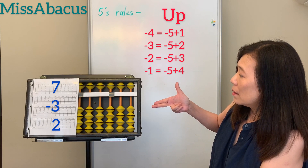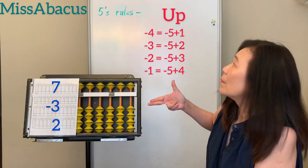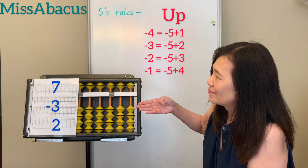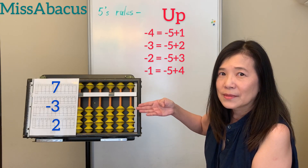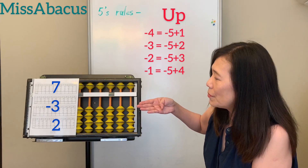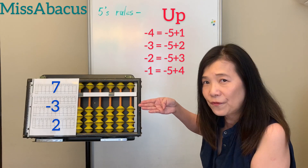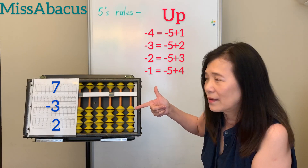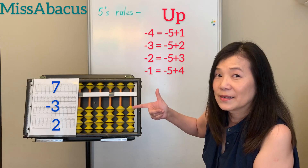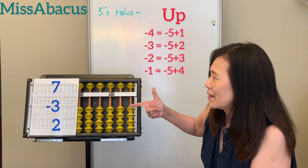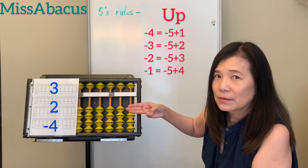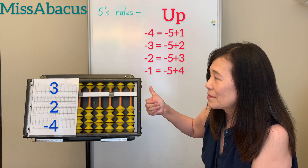Let's do number 6: 7, 5, 6, 7 minus 3. So minus 3 — the rule is minus 5, plus 2. Plus 2: how to plus 2? Use the 5 — because you have 5, so for the 2, plus 5, you can minus 3 back. Answer: 5, 6. This is a 6.